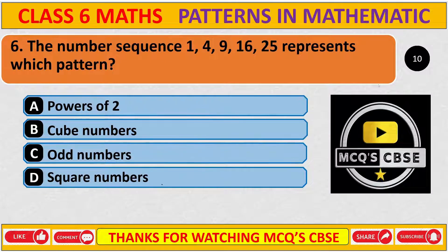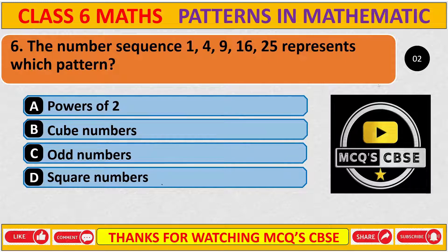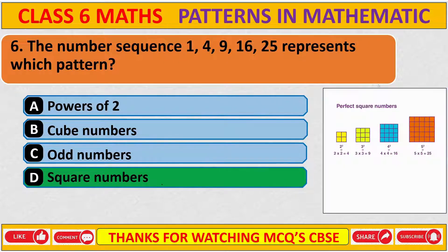The number sequence 1, 4, 9, 16, 25 represents which pattern? These are all square numbers. The correct answer is D, same as question number 5: the square of 2, square of 3, square of 4, square of 5, etc.